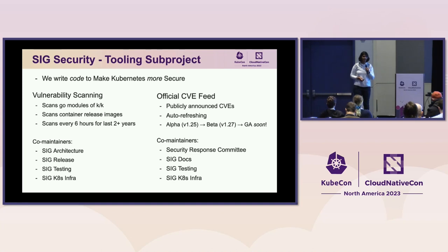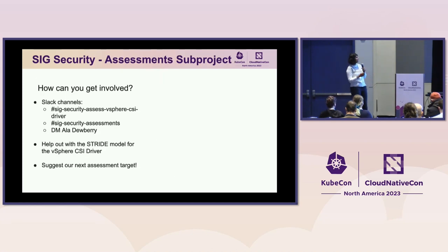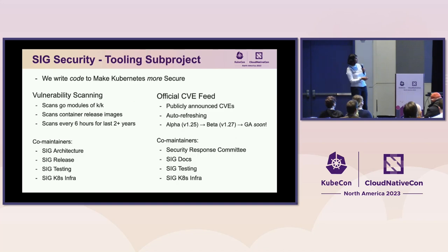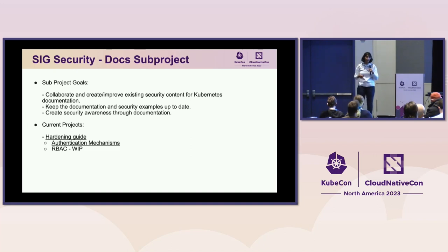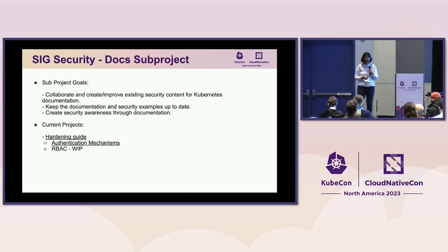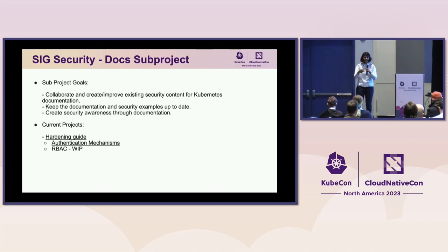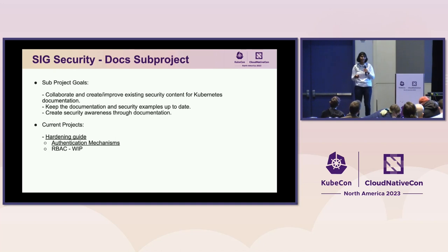Thank you, Pushkar. My name is Savitha Raghunathan, and I am the lead for the SIG Security Documentation Sub-Project. In this sub-project, what we do is create security awareness through documentation — constantly updating all the concepts related to security, creating new tutorials, and updating all the examples so that folks who are consuming Kubernetes can consume it securely. We do that while embodying the principles of SIG Security: we like to share and learn, and we are a very welcoming SIG.